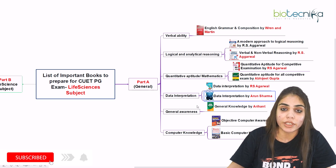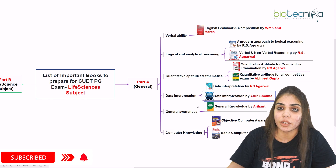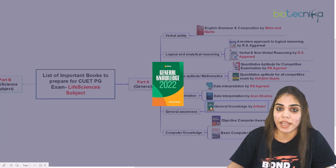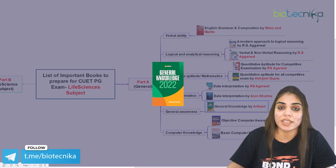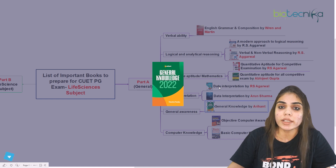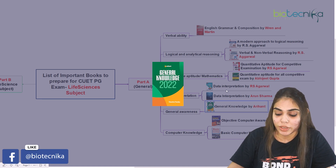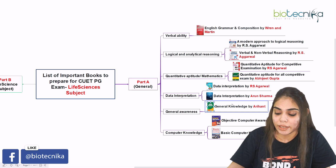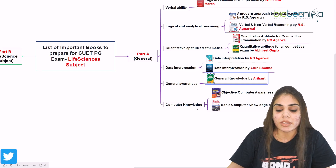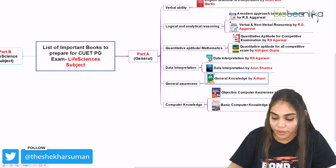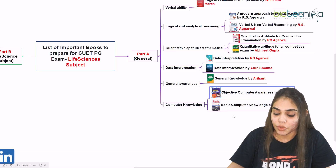The fifth section is general awareness, where you have to keep yourself updated with all general knowledge. For this, you can go for General Knowledge by Arihant — GK 2022 — which covers all the general facts and knowledge for the year 2022. You can go for this Arihant publication.